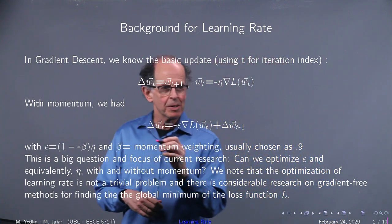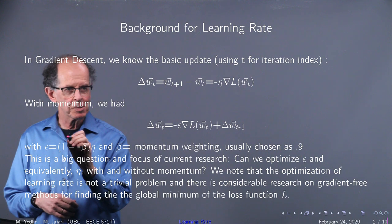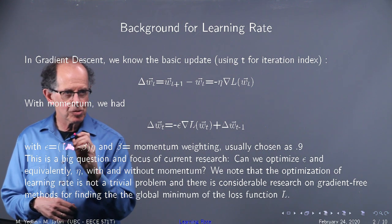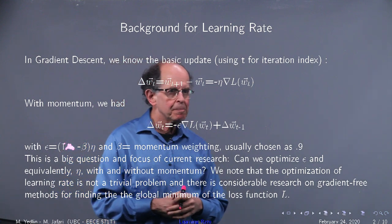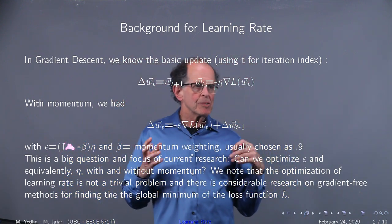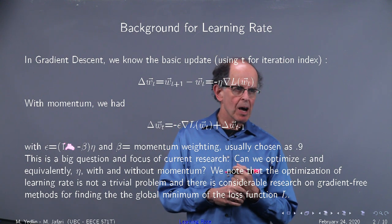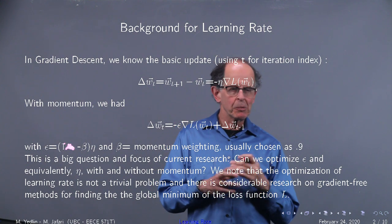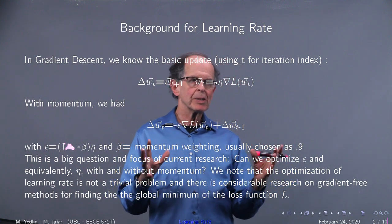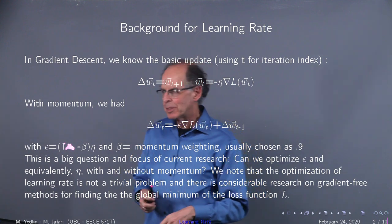There's a typo there — it's not 1 minus minus beta, so get rid of that minus sign. It's just 1 minus beta. Can we optimize epsilon and eta? This is not a trivial problem, but we're going to explore it a little bit so you get some geometrical intuition as to what's involved here.